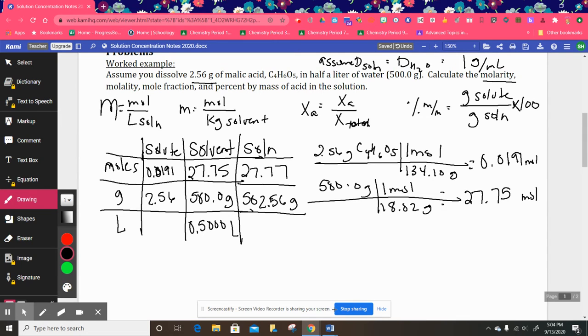So what we can do is now use this information right here to plug into the different formulas. Actually, we can go ahead and get our liters of our solution here as well. Since we're assuming that the density of the solution is the same as the density of the water, we can use the one gram per milliliter. If a different density was given, then you would need to use that other density.